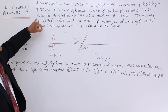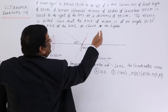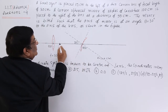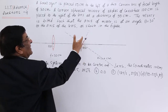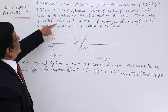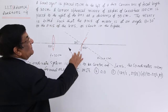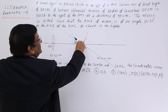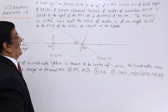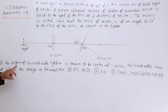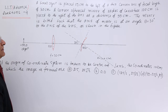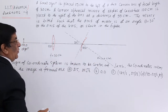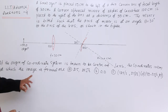A convex spherical mirror of radius of curvature 100 centimeters is placed to the right of the lens at a distance of 50 centimeters, so its coordinate is x equals 50. The mirror is tilted such that the axis of the mirror makes an angle theta equal to 30 degrees to the axis of the lens. The question asks for the coordinates at which the image is formed, with the origin at the center of the lens.